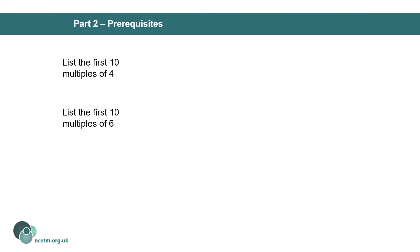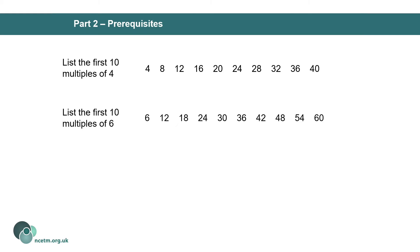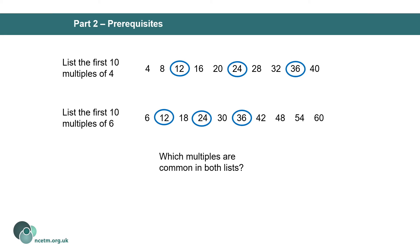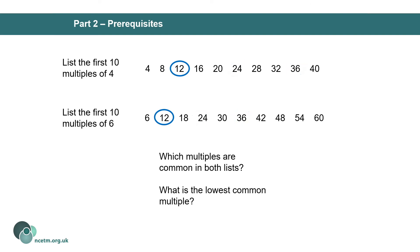Students need to be able to find multiples, as this is another key skill needed when adding and subtracting fractions with different denominators. In this example, I've asked students to find the first ten multiples of four and the first ten multiples of six. Which multiples are common in both lists? We can see that 12, 24, and 36 are in both lists. The lowest common multiple is 12. You might also ask students what the next common multiple would be — can they spot that common multiples are going up in 12s, so the next one would be 48?